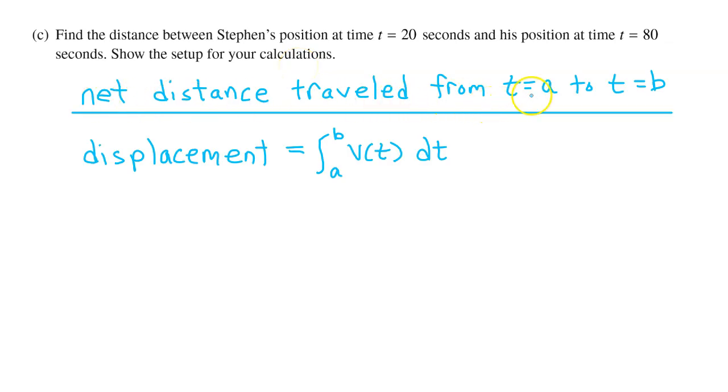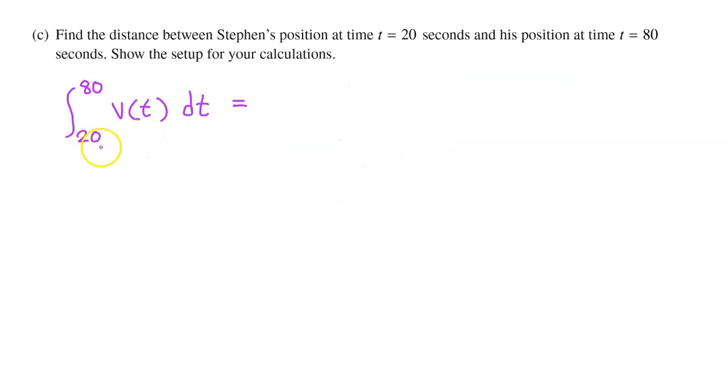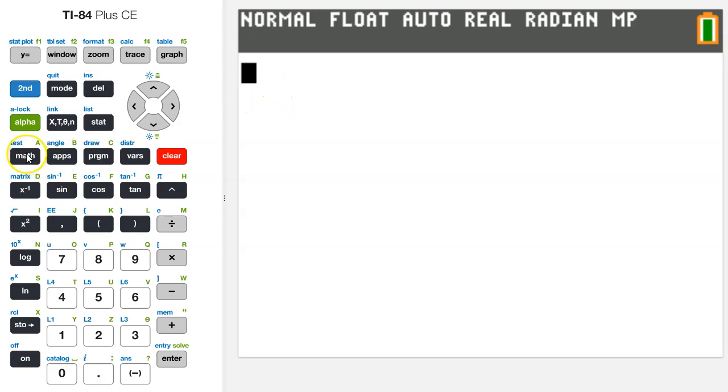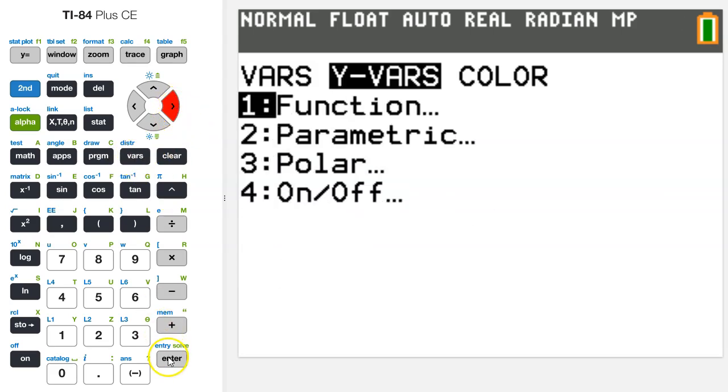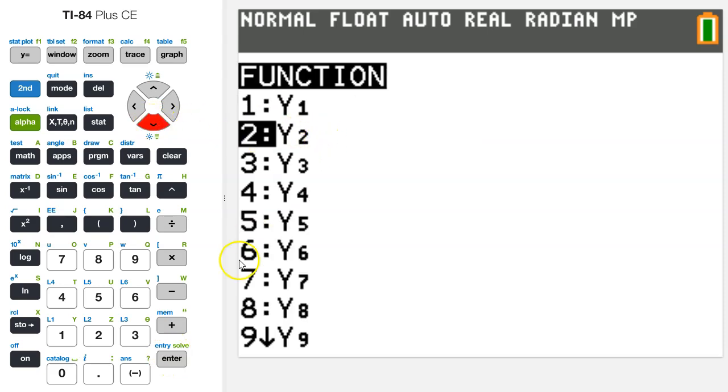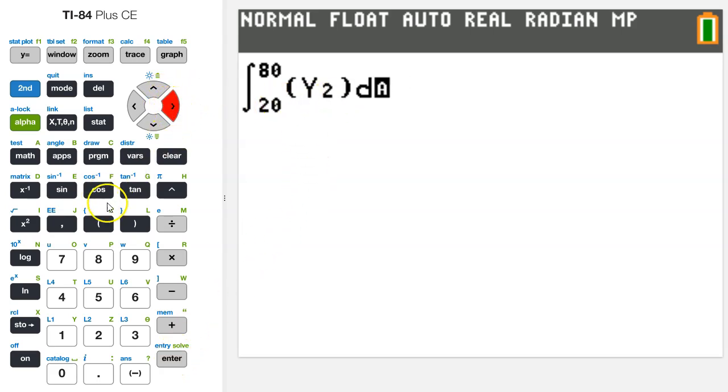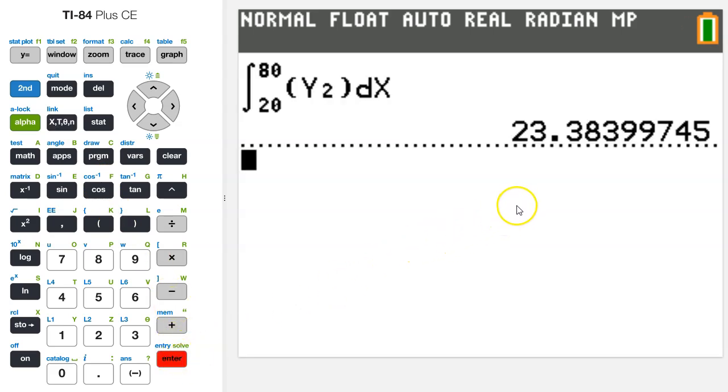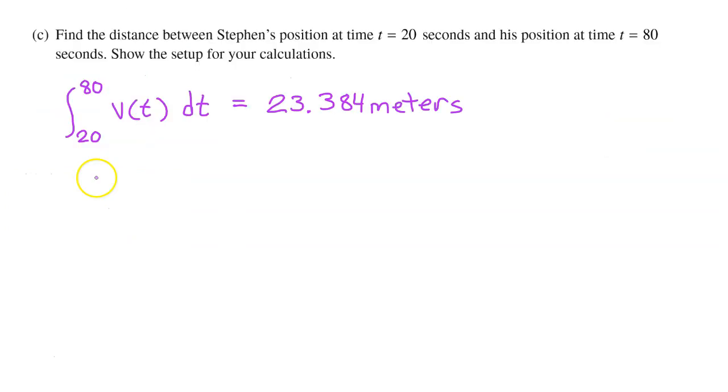The net distance traveled from t equals a to t equals b is called displacement, and it's given by the integral of velocity from a to b. So we just need to find the integral of velocity from 20 to 80. Let's use the graphing calculator. To find a definite integral, you do math 9, and we are integrating from 20 to 80. And right here we need the velocity function. Again, you can type in that whole ugly function, or we can just use y2. So I'm going to hit vars, switch over to yvars, hit enter for function, and choose y2 because that's where my velocity function lives. So this is the integral of velocity from 20 to 80. And that's it. 23.383 if you truncate, or 23.384 if you round. So that's it for part c.